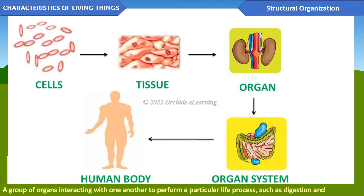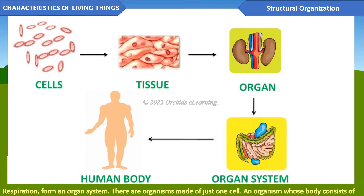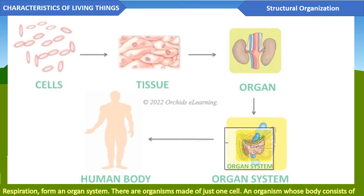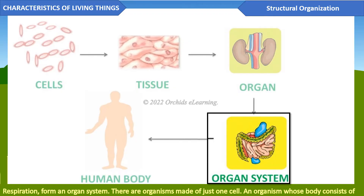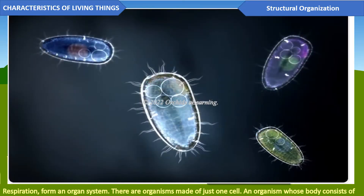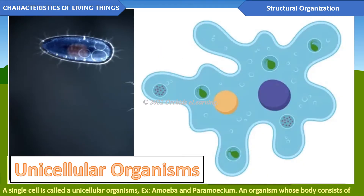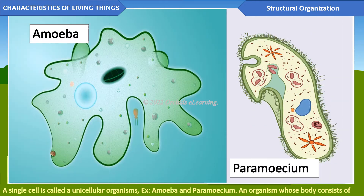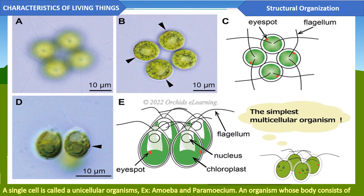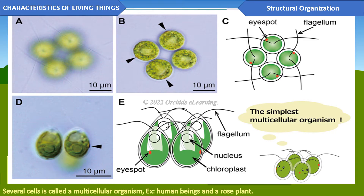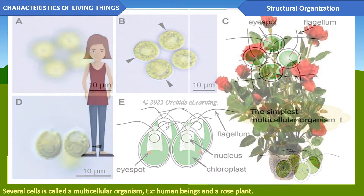A group of tissues performing a particular function in the body form an organ. A group of organs interacting with one another to perform a particular life process, such as digestion and respiration, form an organ system. There are organisms made of just one cell. An organism whose body consists of a single cell is called a unicellular organism — for example, amoeba and paramecium.